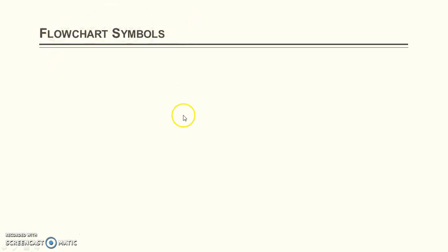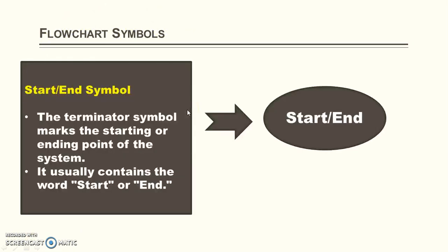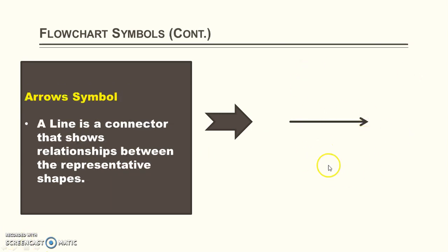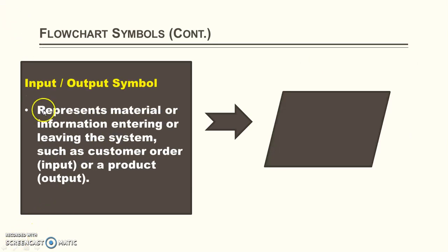Now let's discuss about the symbols used in a flowchart. The algorithm is nothing but a sequence of a finite number of steps, which means your algorithm must have a start and an ending. The flowchart must also have start and end symbols, represented using an oval — that is the terminating symbol marking the starting and end point of the system. It usually contains the words start and end. Next, the arrow symbol is a connector that shows the relationship between the representative shapes. Next, we will discuss about the input-output symbol, which represents material or information entering and leaving the system.